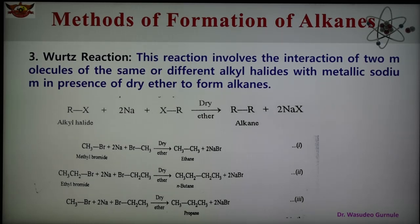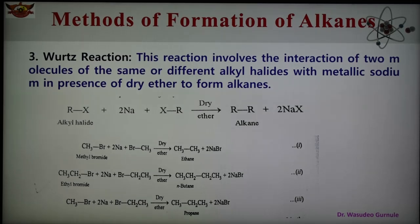The reason is that in the preparation of unsymmetrical alkanes, an equimolar mixture of two different alkyl halides is used. These react not only with each other but also among themselves, producing a mixture of three alkanes. So this limitation makes the Wurtz reaction unsuitable for alkanes with an odd number of carbon atoms.